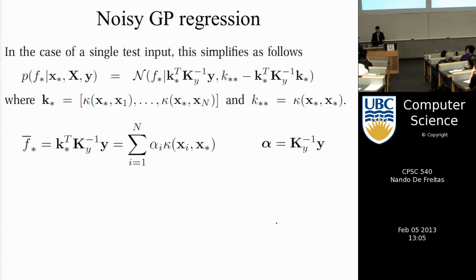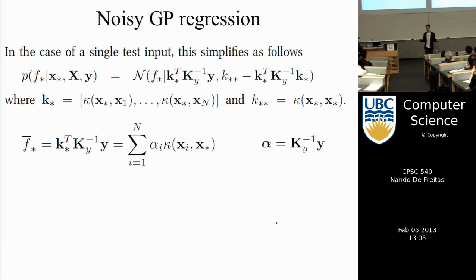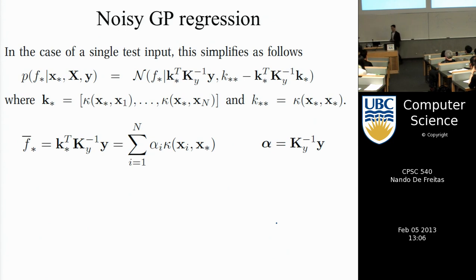Let's go back to Gaussian processes and derive them from a different perspective. Hopefully this will connect Gaussian processes to the linear models you learned and to homework one. Let's assume we have a single test point x-star.